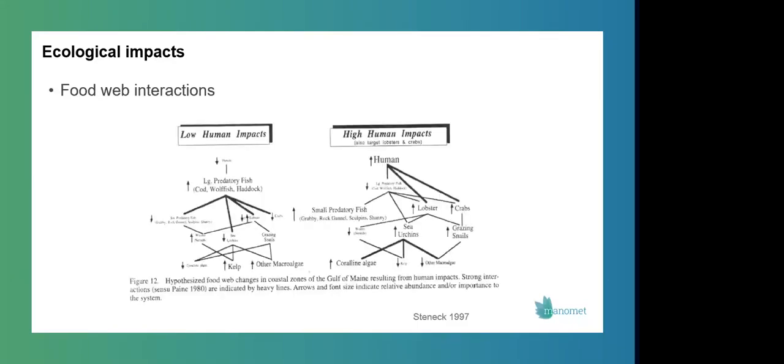So really quickly, I'm going to use this diagram of the Gulf of Maine food web to explain what I mean. So don't get too wrapped up in looking at all of the arrows and tiny text here. I'm just going to walk you through this. So this left hand side is looking at the Gulf of Maine food web with low human impacts. So essentially before or before industrial fishing occurred.